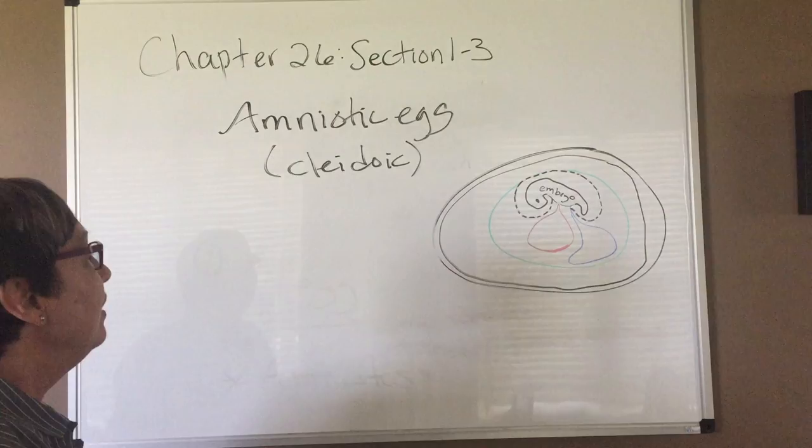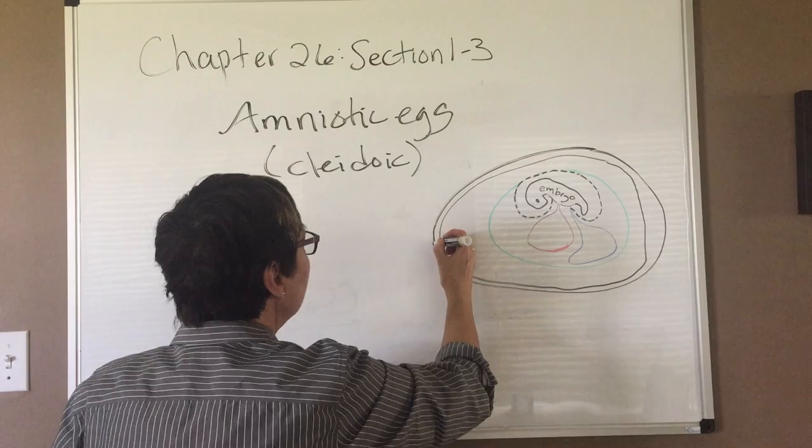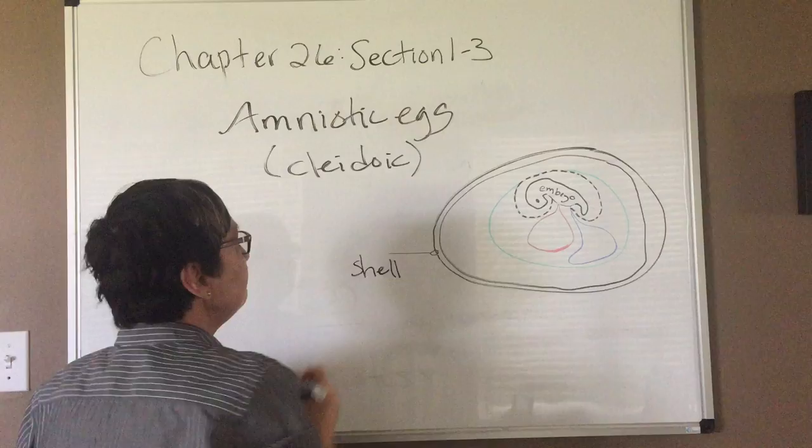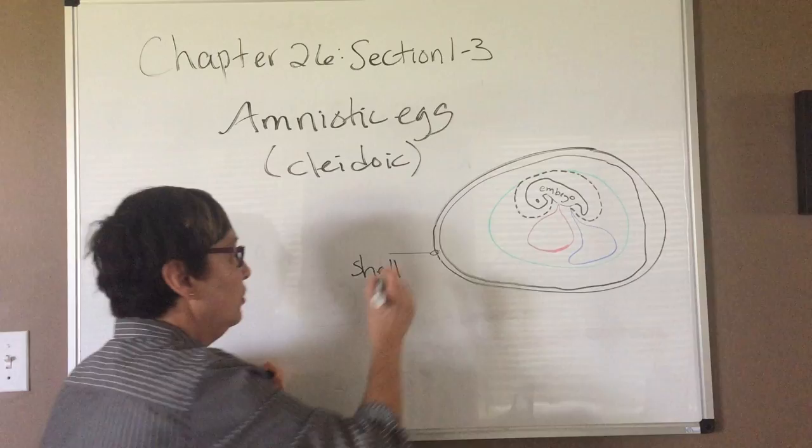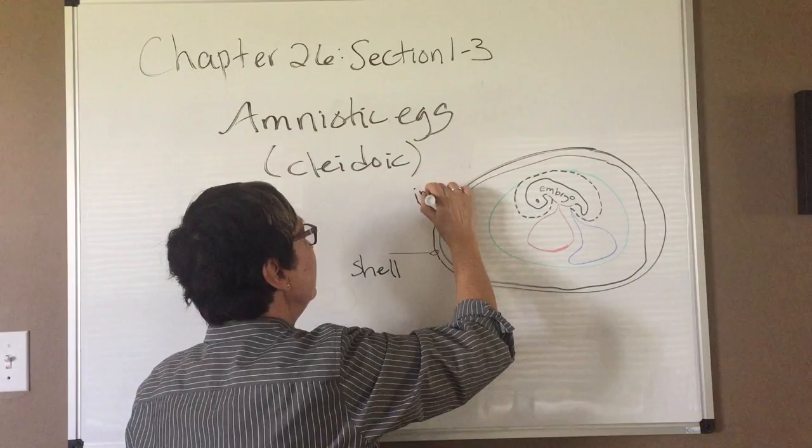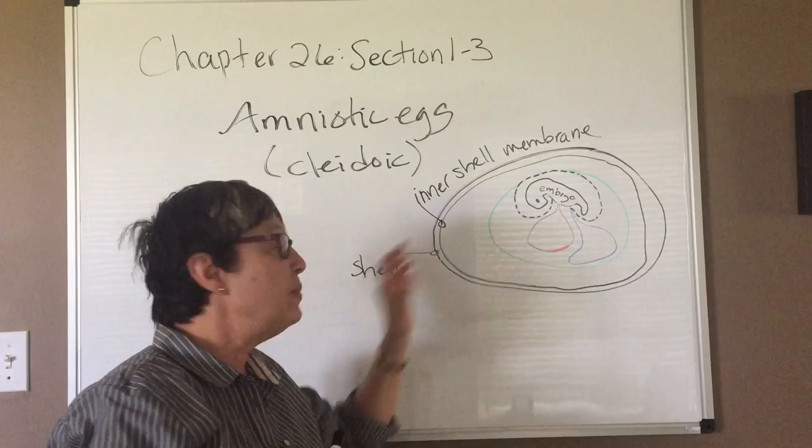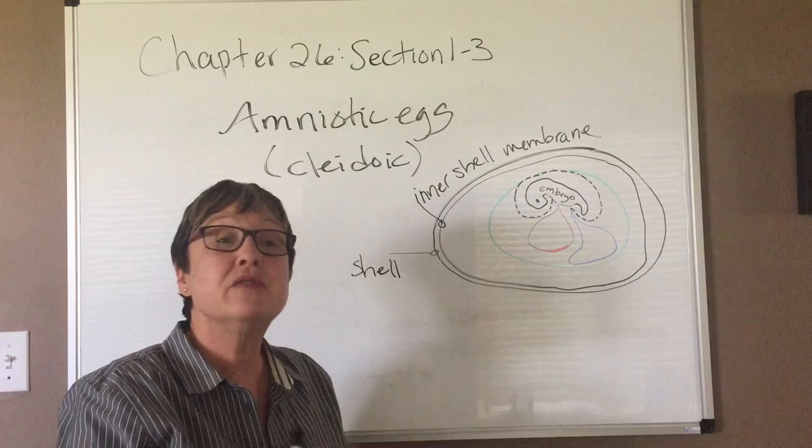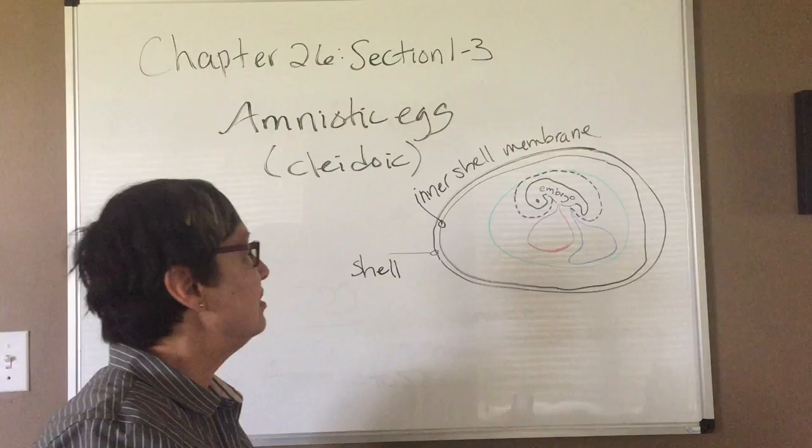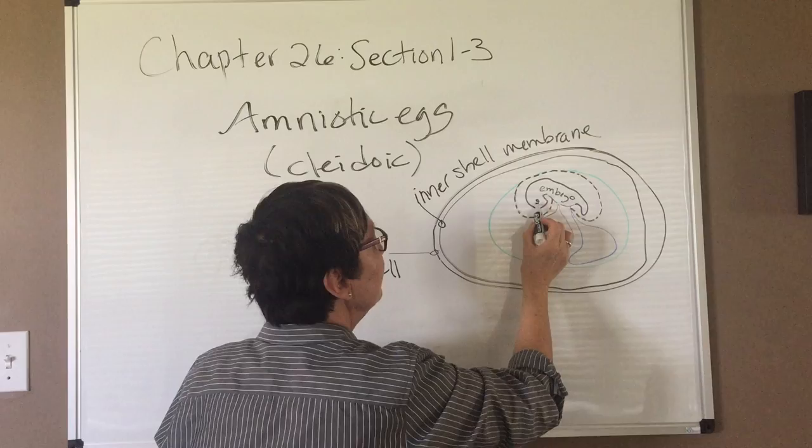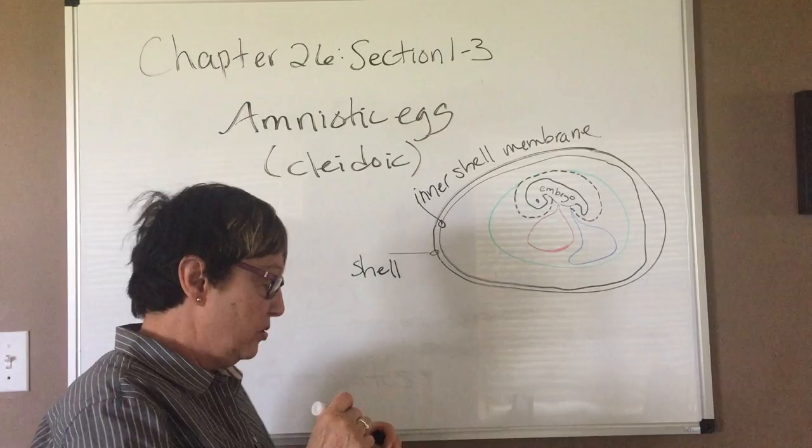So here we have a diagram of this kind of egg. And first off, we have an outer shell, which is certainly going to protect the embryo. We have an inner shell membrane. And then within that we have four special membranes that all serve various functions. I'm going to talk about their functions, but they all serve the embryo in some way. So here's our embryo right here.